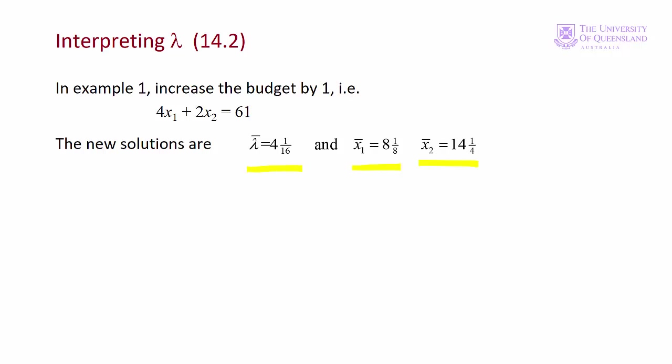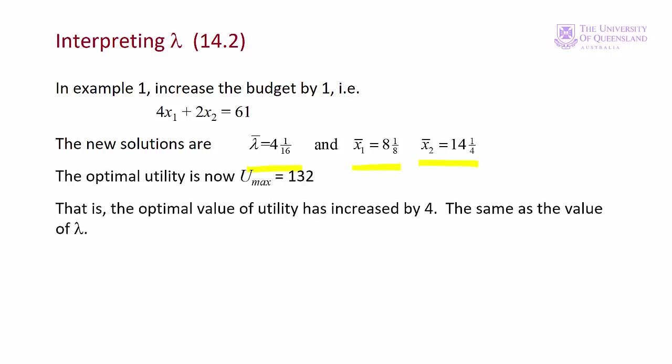Remember that the optimal solution in example 1 was 128 when the budget was 60. The new optimal solution is 132, an increase of 4 units.